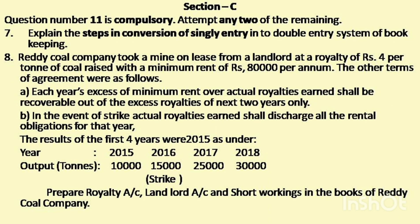Let us discuss Section C questions. Section C contains 5 questions, out of which students must solve 4 problems. Problem number 11 is compulsory. From questions 7, 8, 9, and 10, the student must write 2 questions, and the 11th question is compulsory. Each question carries 10 marks; 10 into 3 is 30 marks. Section C starts. Question No. 7: Explain the steps in conversion of single entry into double entry system of bookkeeping.